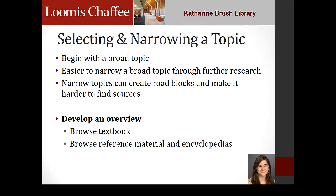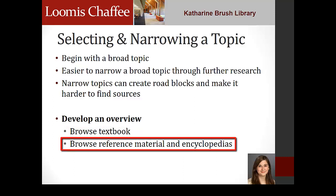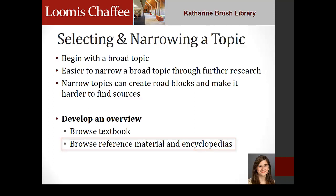Once you have chosen a broader topic, the next step is to develop an overview. The goal of this exercise is to gather background information on your topic. Your textbook is a great place to start when choosing a topic, narrowing a topic, and developing an overview. You can browse time periods and chapters of interest. In addition, each chapter of your textbook is broken down into narrower subtopics. Reference material, especially encyclopedias, will also help you narrow and develop an overview of your topic. We will explore the process of using encyclopedias for background research later in this module.